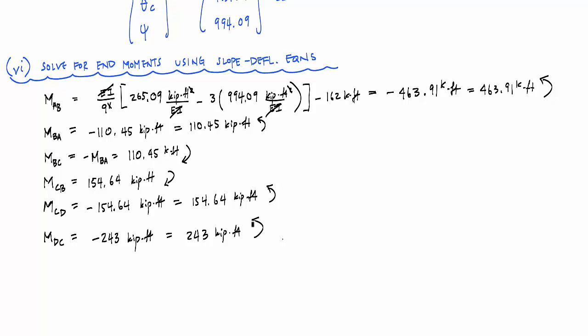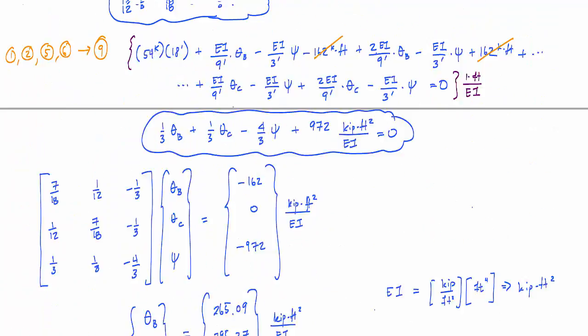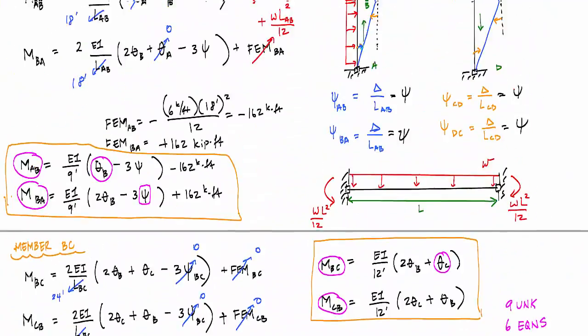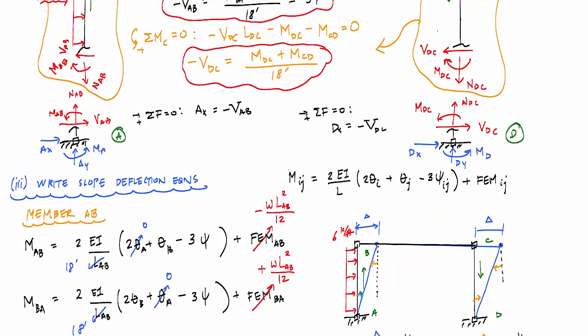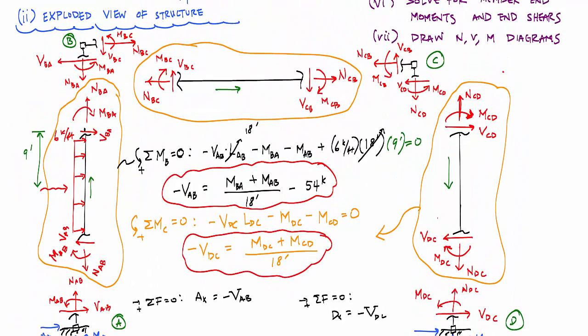And now that we have our end moments, we can go back to the members. We can draw these moments in correctly. How many pages was that? All right. I can go back to all these members, draw in the moments in their correct magnitude and orientation and use equilibrium to calculate all the end shears and any axial forces if they're present, but I can do that. And then also draw, just again, looking at one beam at a time, going left to right, draw the shear and moment diagrams. What's up? All right. Using basic statics concepts.